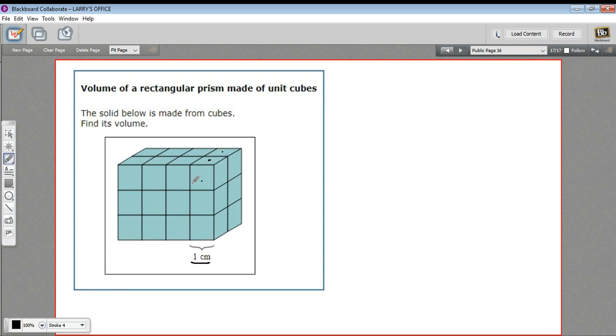And this is actually 1, 2, 3, 4 on one side and 1, 2, 3 on the other side, so 3 by 4 is 12. So there's 12 here, there's 12 in this back row, so this would be 24 cubic centimeters, so we write that as centimeters cubed.